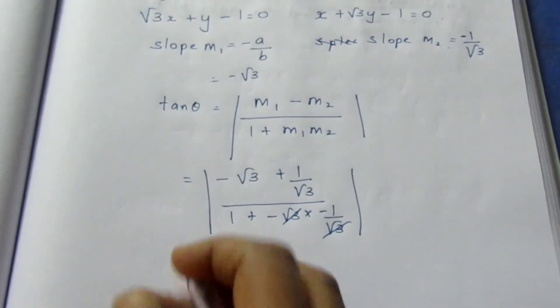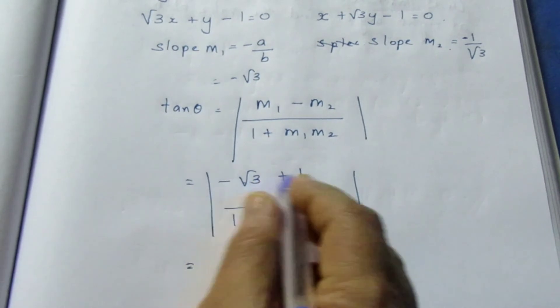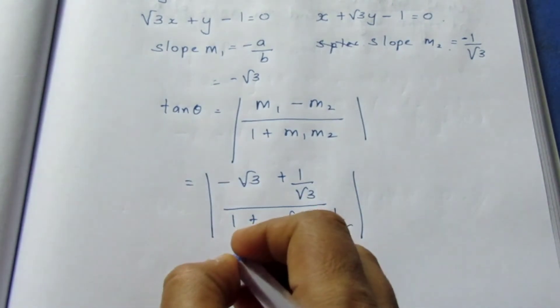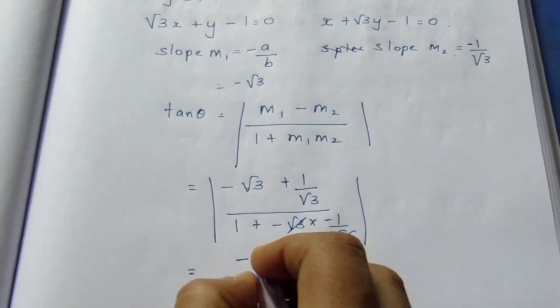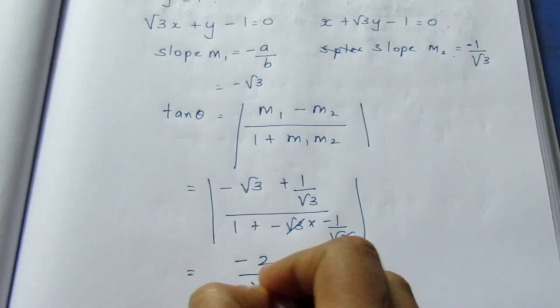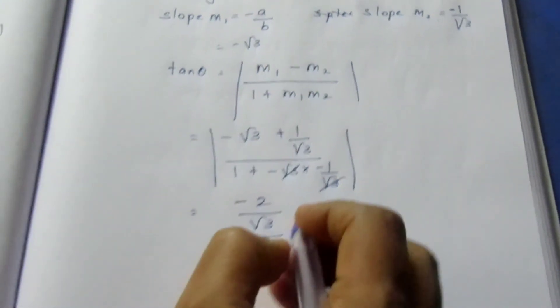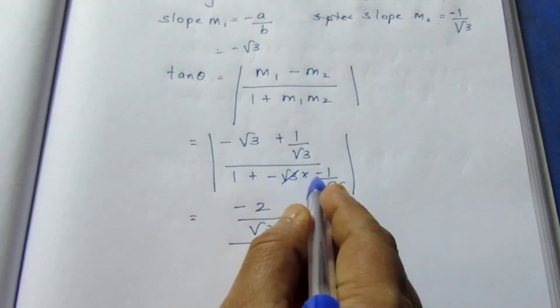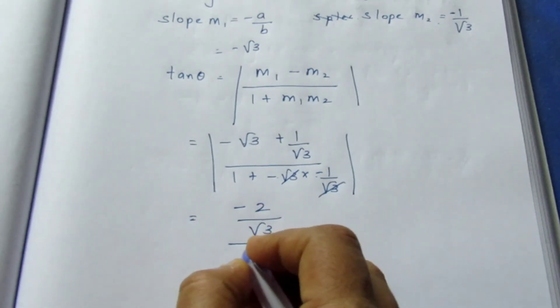Now here it becomes 3. 3 + 1 will become -2/√3 by... On the denominator part, minus times minus becomes plus, so 1 + 1 will become 2.